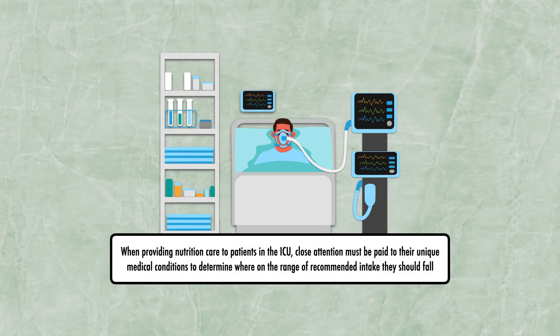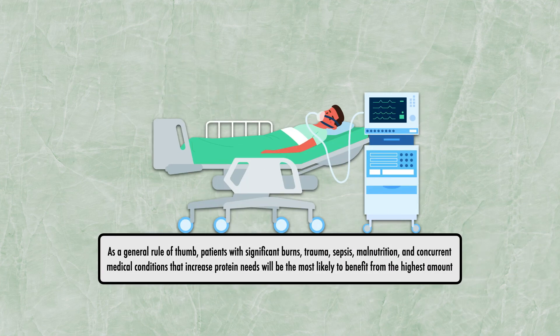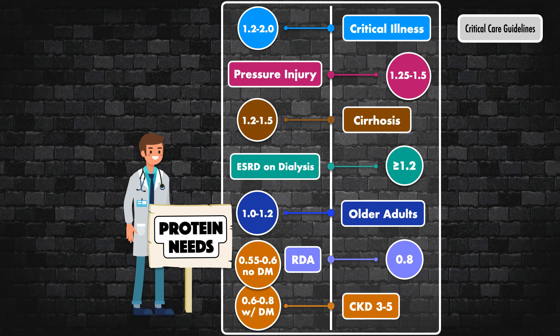In the end, when providing nutrition care to patients in the ICU, close attention must be paid to their unique medical conditions to determine where on the range of recommended intake they should fall. As a general rule of thumb, patients with significant burns, trauma, sepsis, malnutrition, and concurrent medical conditions that increase protein needs will be most likely to benefit from the highest amount. Adding to the chart of protein needs, we can insert the recommendation from the 2021 Critical Care Guidelines: 1.2 to 2.0 grams per kilogram per day.